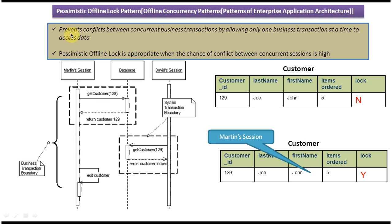This confirms the explanation: the pattern prevents conflicts between concurrent business transactions by allowing only one transaction at a time to access the data. This is achieved by maintaining a lock column in the customer table.